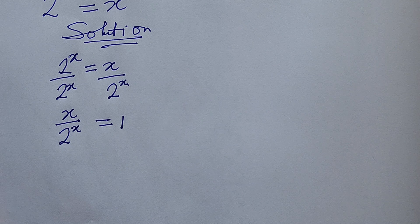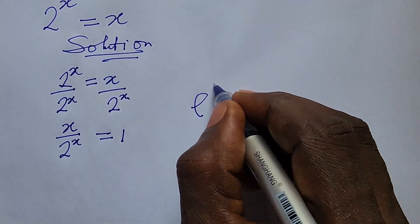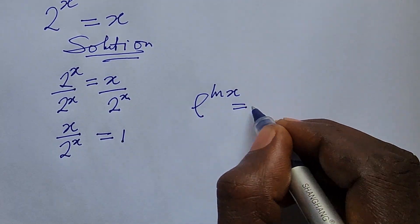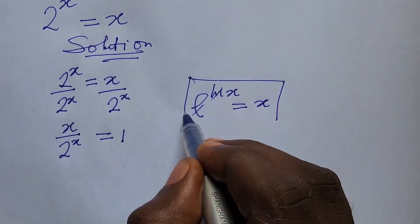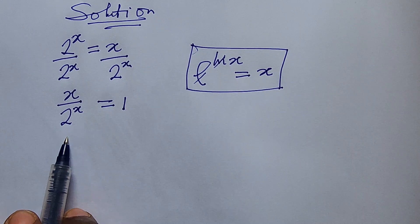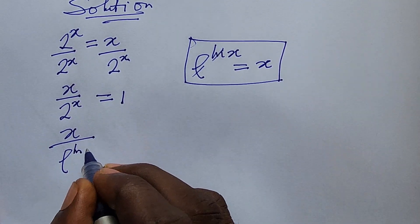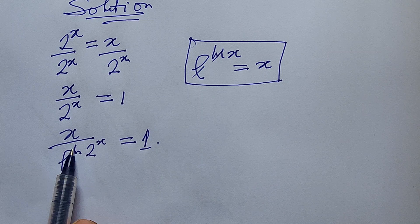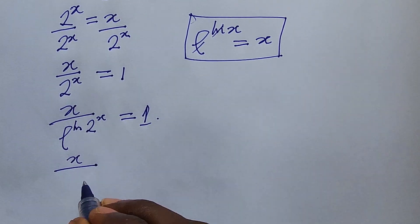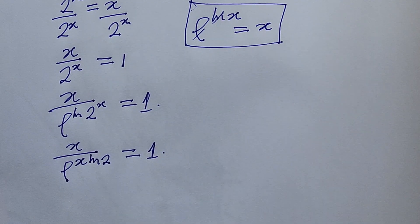What we do here is rewrite the denominator by introducing e to the power of ln. Remember that e to the power of ln of x gives us x — because ln is the inverse of e. Applying this, we rewrite the denominator: x over e to the power of ln(2^x), which gives us x over e to the power of x·ln(2), all equal to 1.